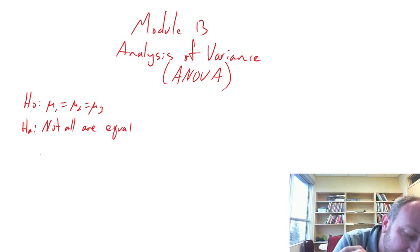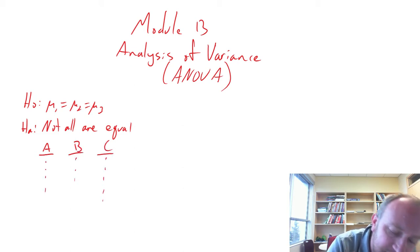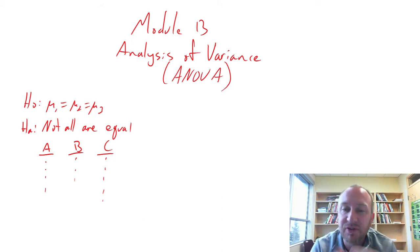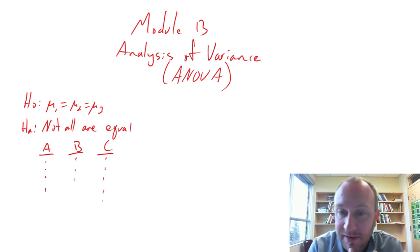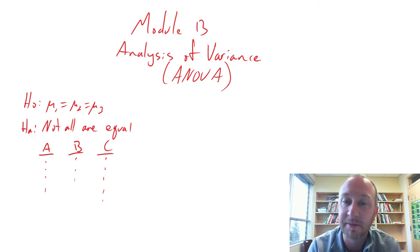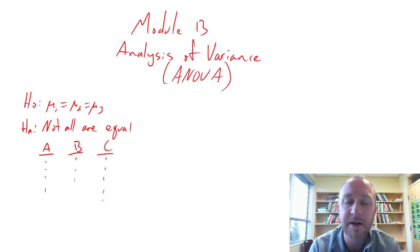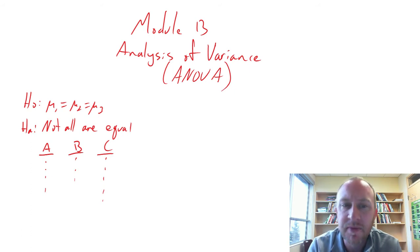Throughout this module we'll look at a couple of different experimental designs. One is the completely randomized design, another is the randomized block design — very comparable to the independent samples and matched samples from chapter 10. We'll also look at a third called the factorial design, which is a bit more complex.